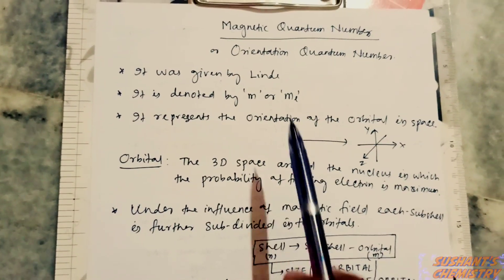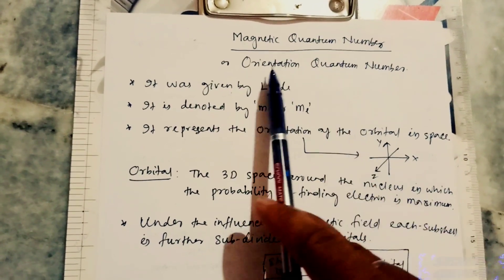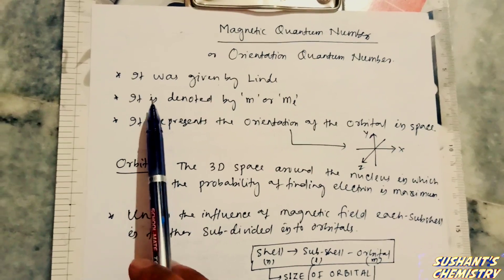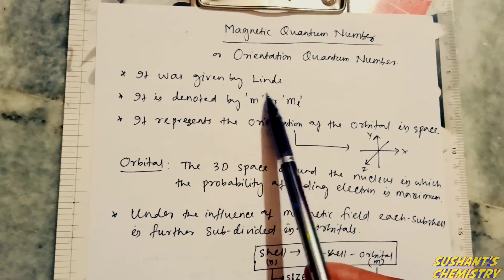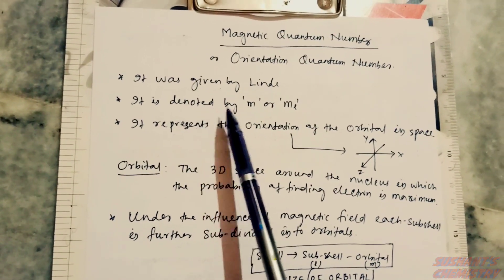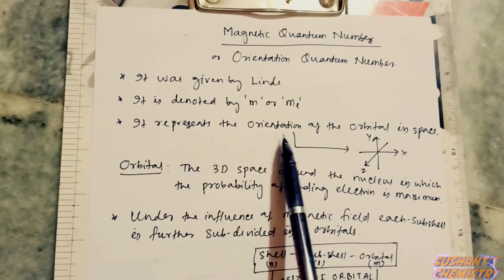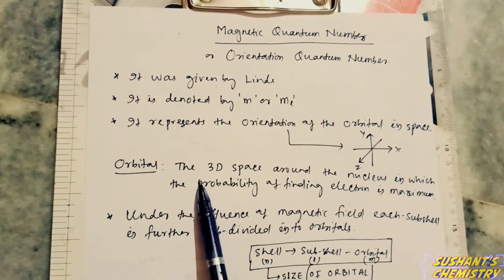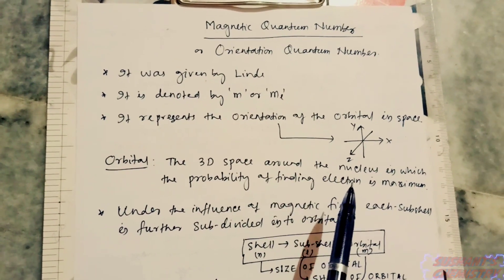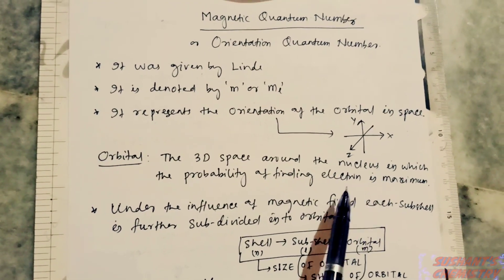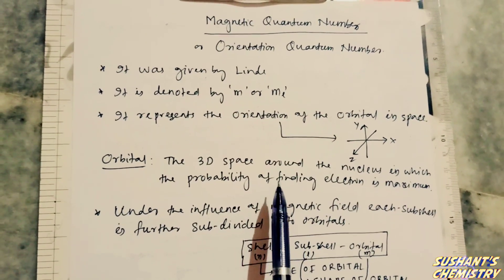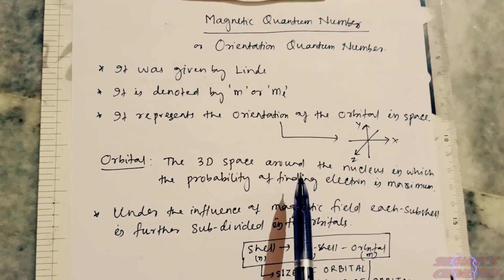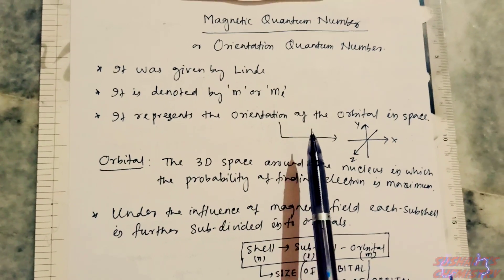Today we start the magnetic quantum number, also known as the orientation quantum number. It was given by Linde and is denoted by m or ml. It represents the orientation of the orbital in space. An orbital is the three-dimensional space around the nucleus where the probability of finding an electron is maximum.